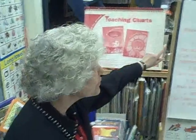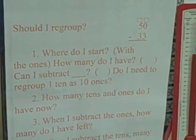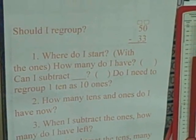You've asked the right question. Let's look at the chart. Should I regroup? Where do I start? With the ones. I start with the ones. How many ones do I have?